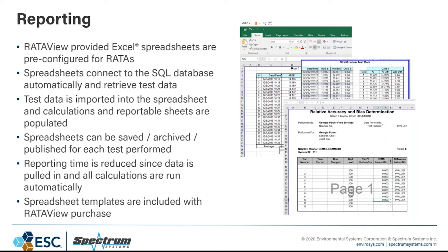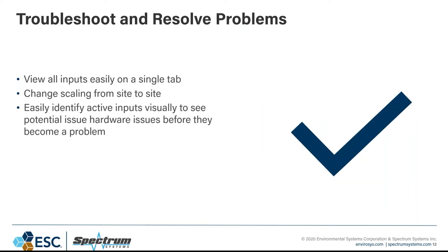For each test or each site you visit, you put in the test identifier, pull the results in, do the calculations, then save a copy of that spreadsheet into a folder so it's archived and can be handed off to the customer. RataVue also has some options to troubleshoot and resolve problems. Out in the field you can run into IO issues, different setups at the site than expected, and there are areas in RataVue where you can go to visually see what's going on and potentially troubleshoot those issues.